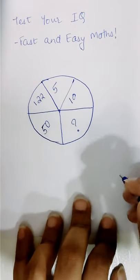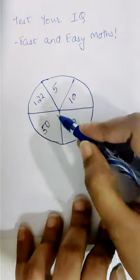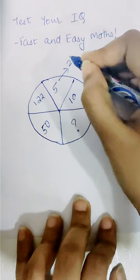Welcome everyone, so today we are going to solve the question which was uploaded yesterday. If you look closely, all of these are closer to squares. This is closer to 2 square plus 1, this is 3 square plus 1.